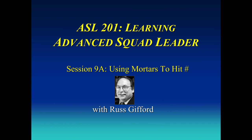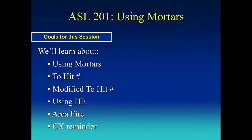To do that, you need to know how to use them. This time we are going to learn how to fire mortars and hopefully hit your targets. The goals for this session: we're going to actually use mortars, use the two-hit number, and learn how to modify it. We're going to be using HE, and because it's a mortar, we're going to be using area fire. And we're going to remind ourselves of other rules we've already learned - in this case, counter exhaustion, the CX.